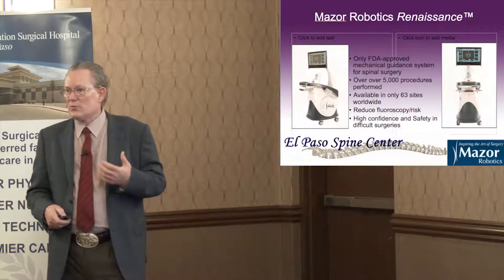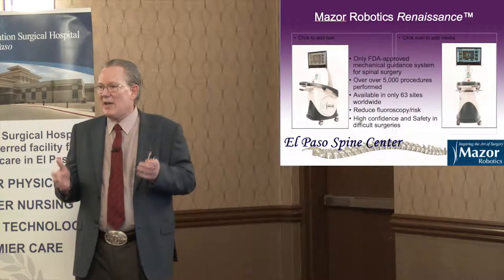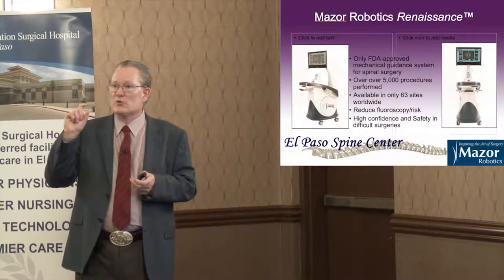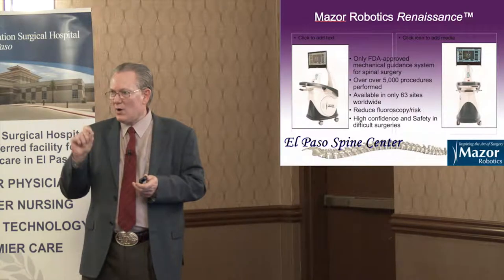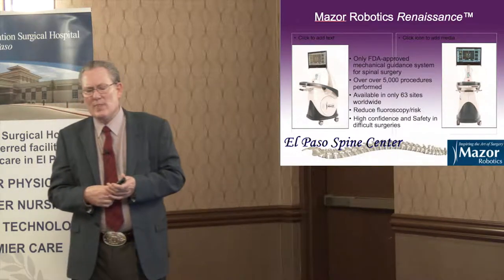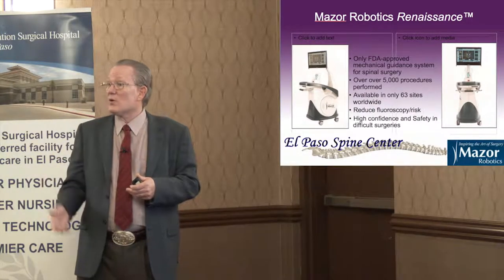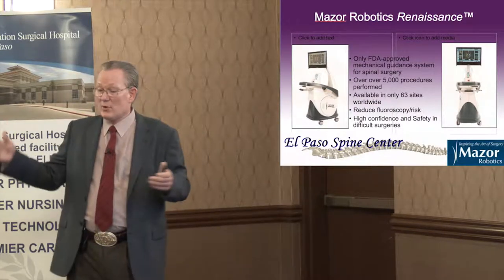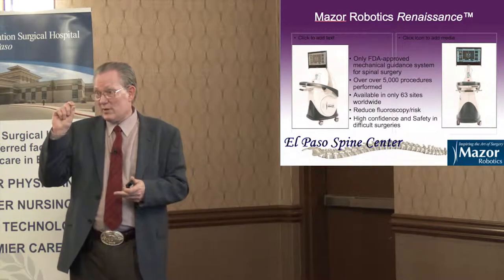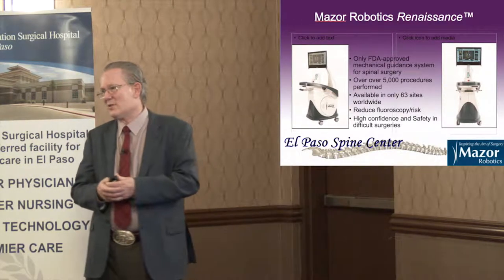The robot is something we use frequently, and we have a model here you can look at after the talk. The robot is a guidance system — it gets the surgeon to a very precise point. For example, if I want to put a screw in a bone and the target spot is very small, the robot guides us with precise accuracy. As the population gets bigger, it can be more difficult to do minimally invasive surgery because you have to go through a large amount of tissue to reach a target. If you have the robot, it does it without you having to struggle — so that's obviously easier.